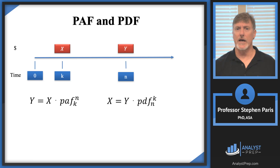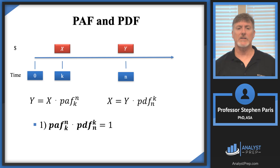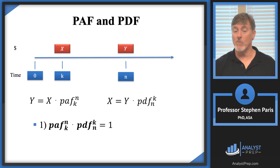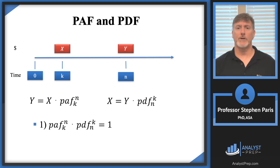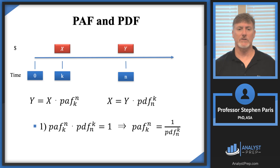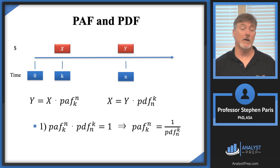The first remark is: if I take the periodic accumulation factor from time K to time N and multiply it by the periodic discount factor from time N back to time K, I've accumulated and then discounted back over the same period, so I must get back to the same amount I started with. This forces that product to equal one. Rewritten: the periodic accumulation factor from K to N equals one divided by the periodic discount factor from N back to K. In other words, these factors over the proper time periods are reciprocals of one another.